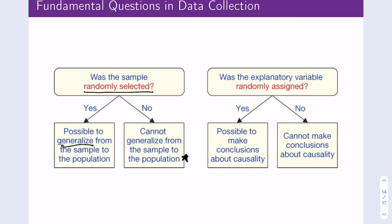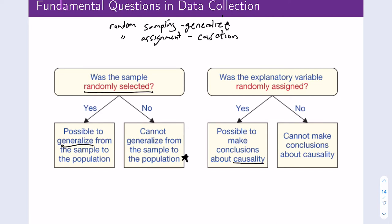Was the explanatory variable randomly assigned? If yes, then you can make causal claims. If no, you cannot. So remember: random sampling allows us to generalize, and random assignment allows us to talk about causation. I will ask you about this over and over again throughout the semester — you'll see activities on this, and these things will appear on the quiz.